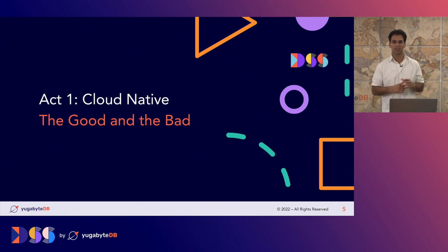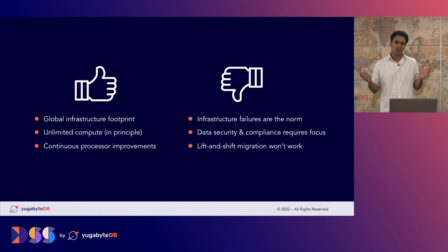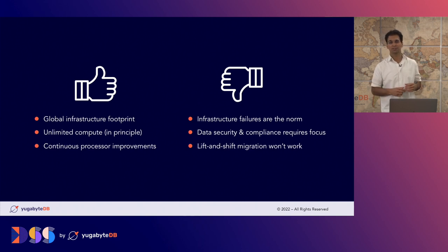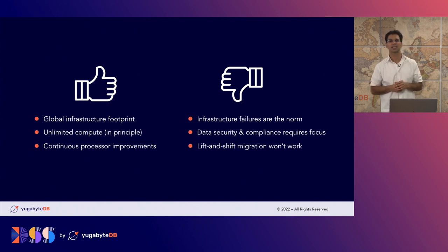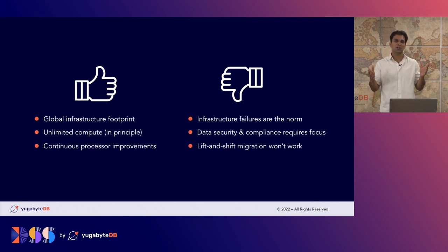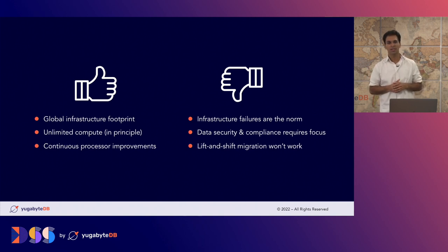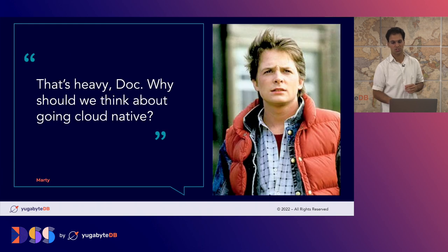The first thing is about embracing cloud native — the good and the bad. The cloud has a global footprint on commodity servers, which makes it cheap and very attractive, but also prone to failures. You have unlimited compute, and continuous improvements in gravitons, ARM processors, and better networking fiber. But you have to deal with failures, focus on data security and compliance, and realize that lift and shift does not work in the cloud — you have to architect for it.